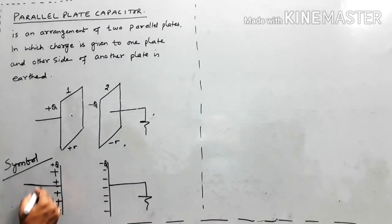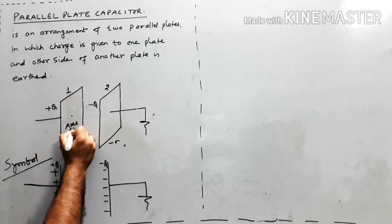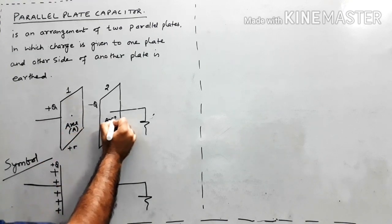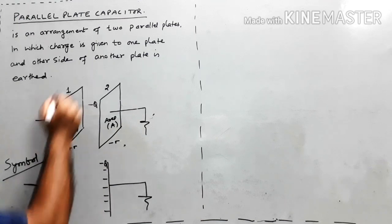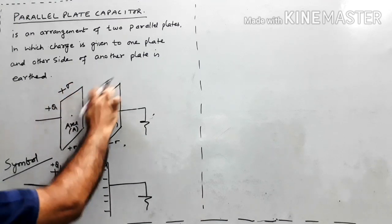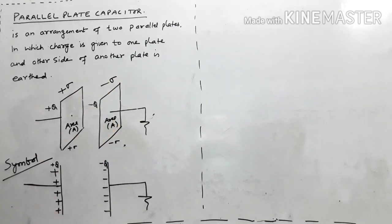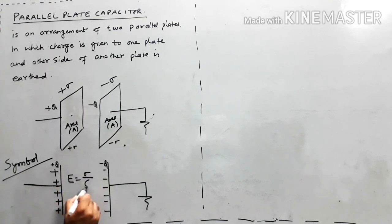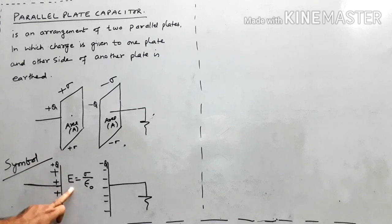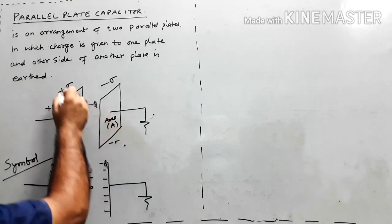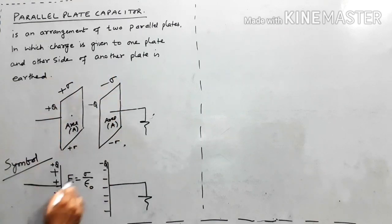Symbolically, if the area of each plate is A, the surface charge density on plate one is +σ and on plate two is −σ. Students, always remember: the electric field E between two parallel plates having surface charge density σ is equal to σ/ε₀. We have covered this in the previous chapter.